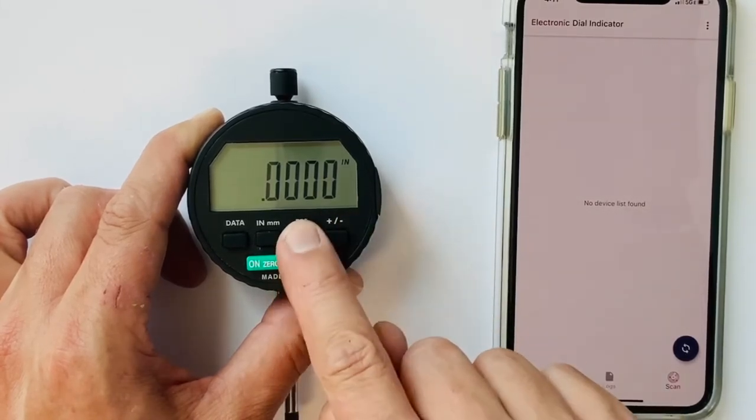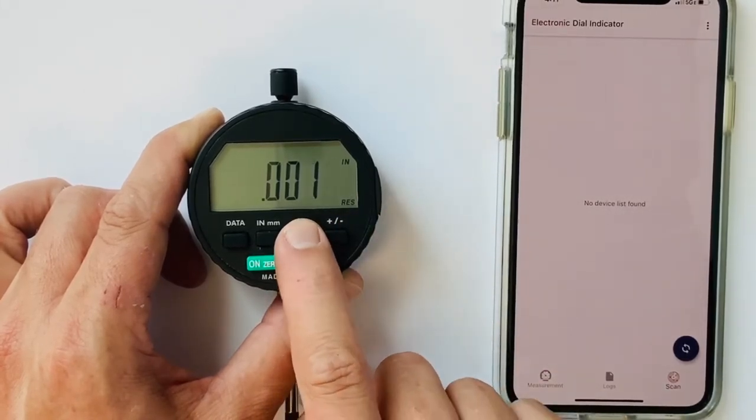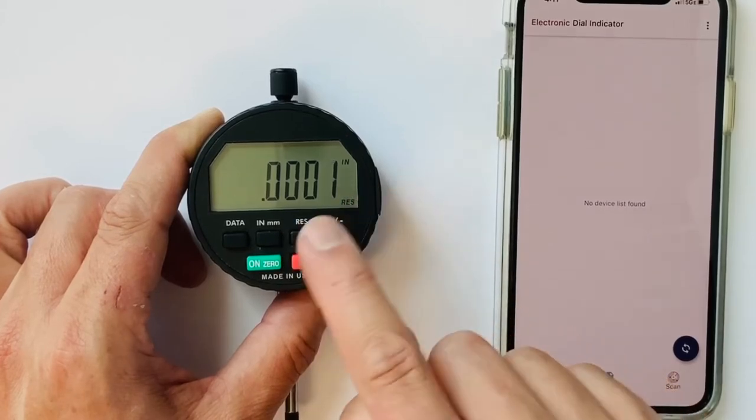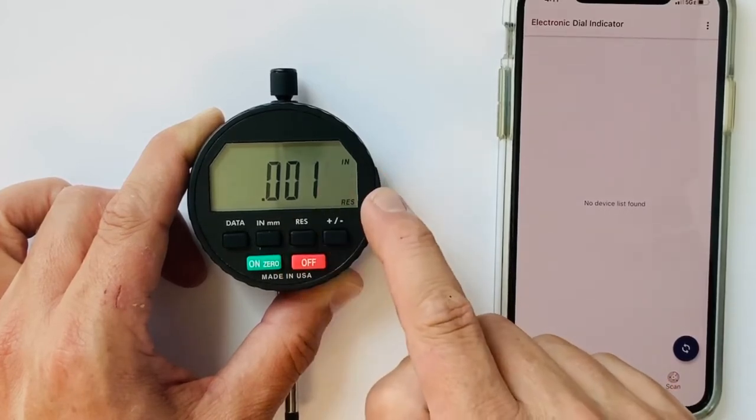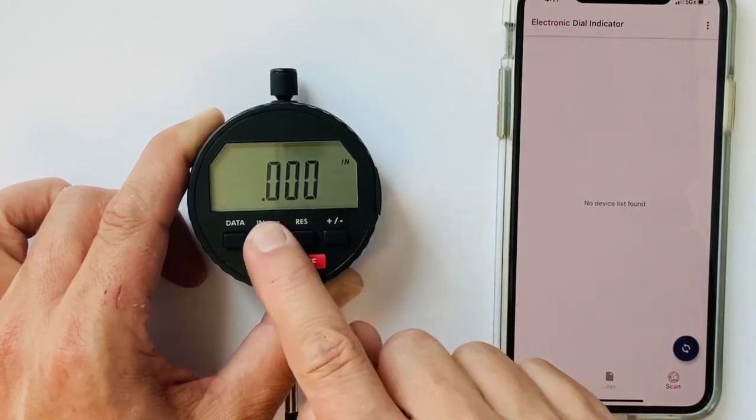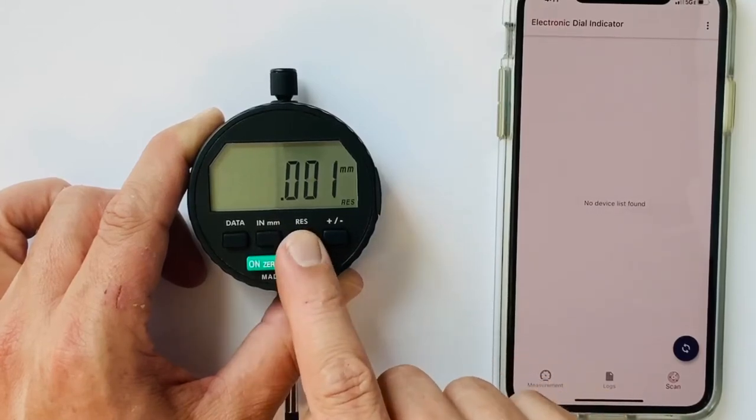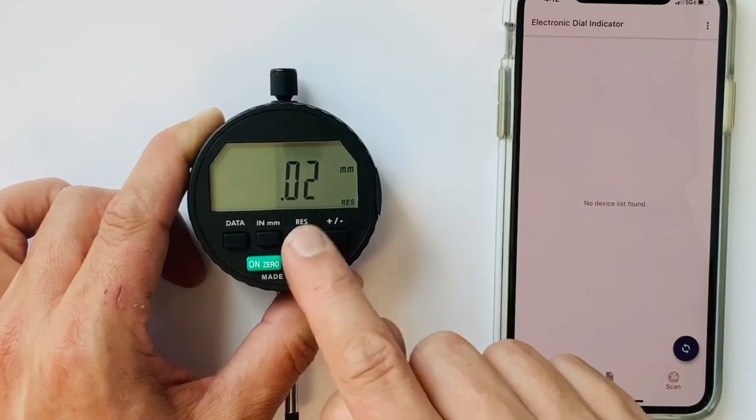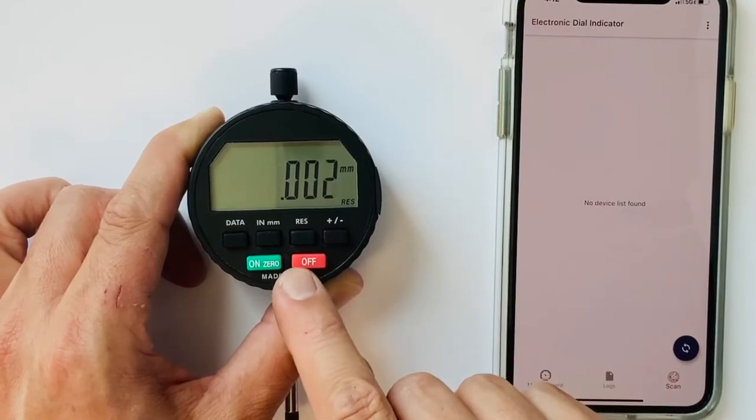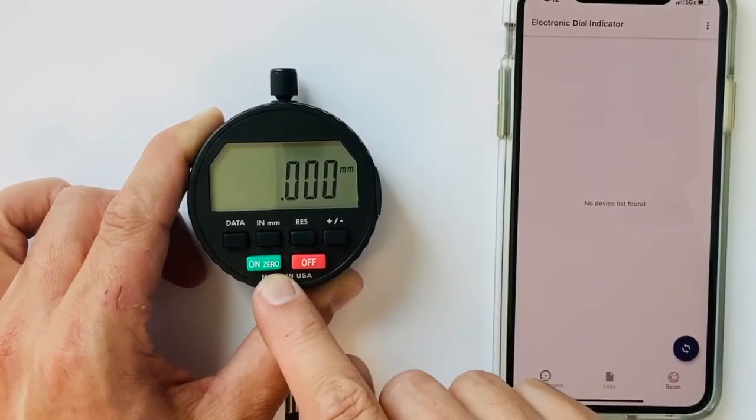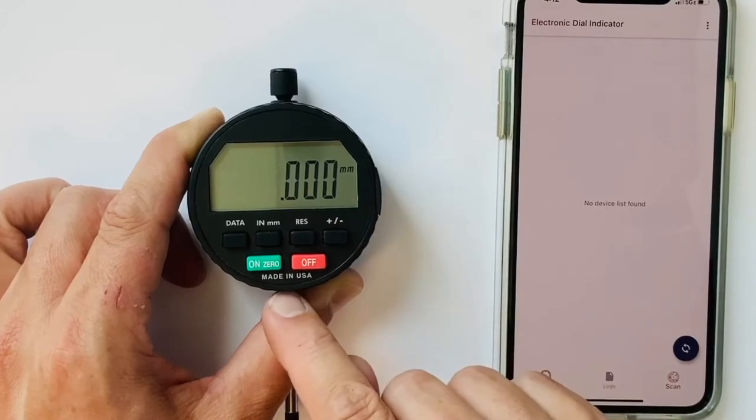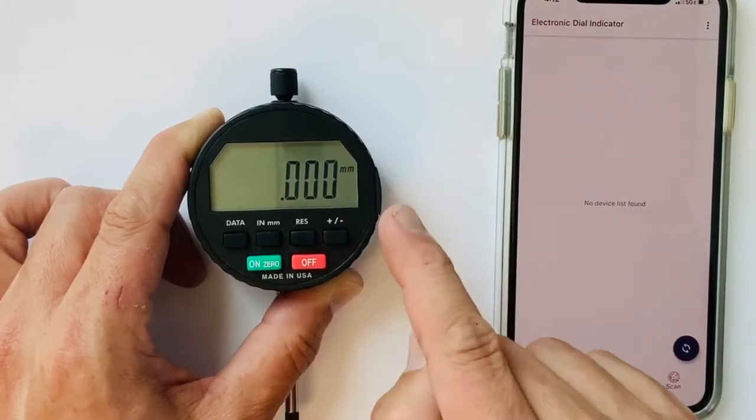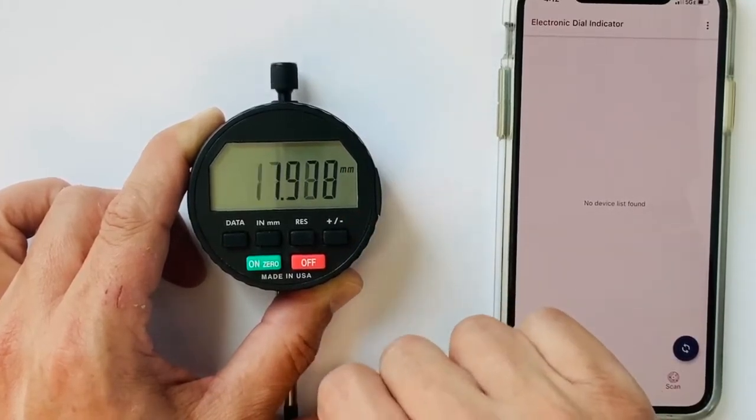This is a 50 millionths indicator. So I can go to 50 millionths, one tenth, five tenths, one thousandths, or in metric terms we can go to 1 micron, 2 micron, 10 micron, and 20 micron. Once again once I stop toggling it will time out and set it at the resolution I chose.